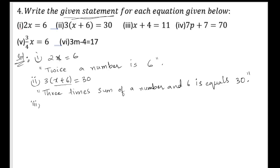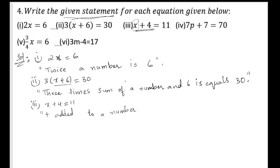Third bit: x + 4 = 11. This is the sum of some quantity x and 4. So x is some unknown number and 4 is added to it. We can write: 4 added to a number gives 11.